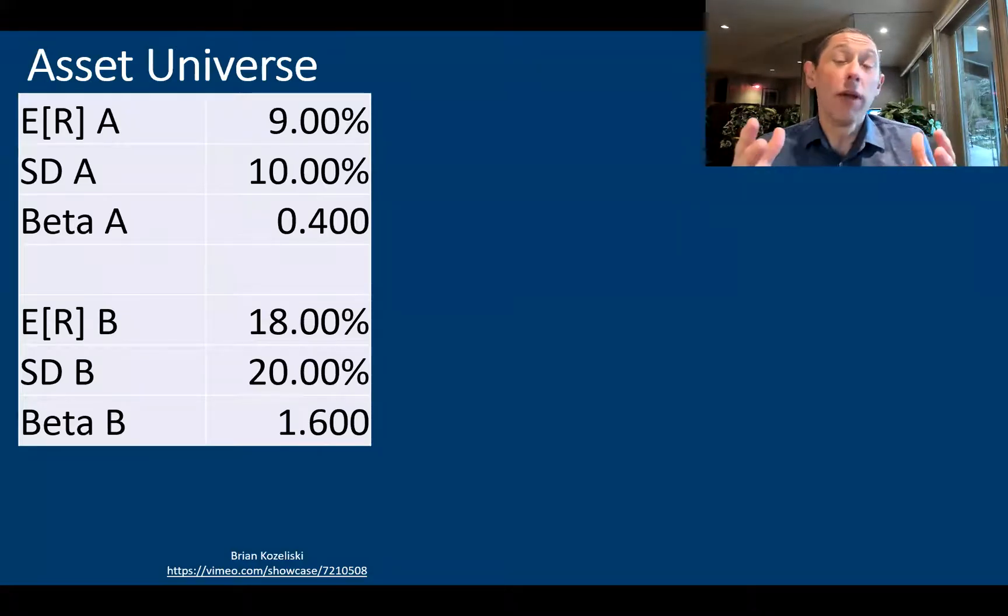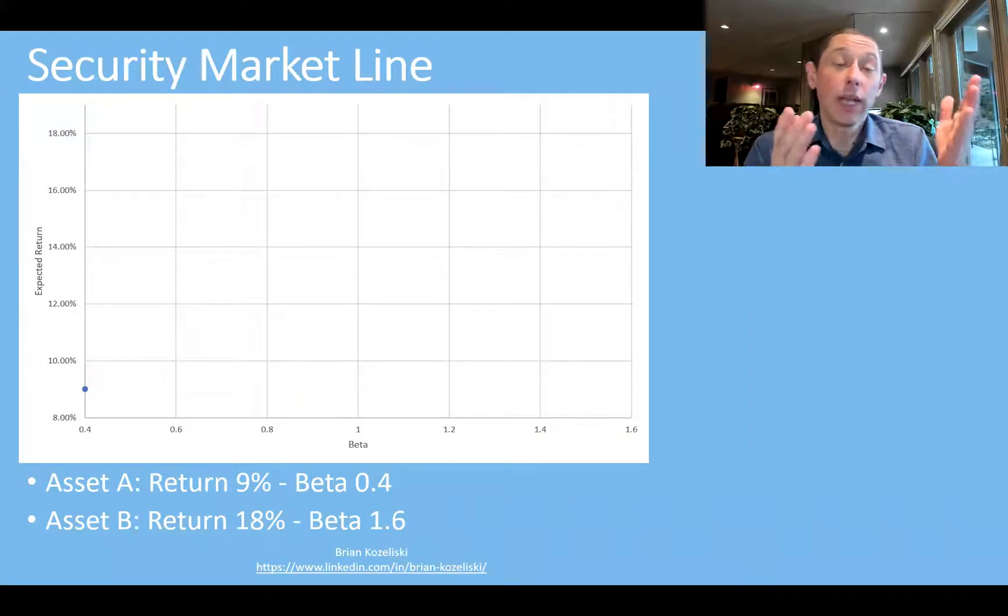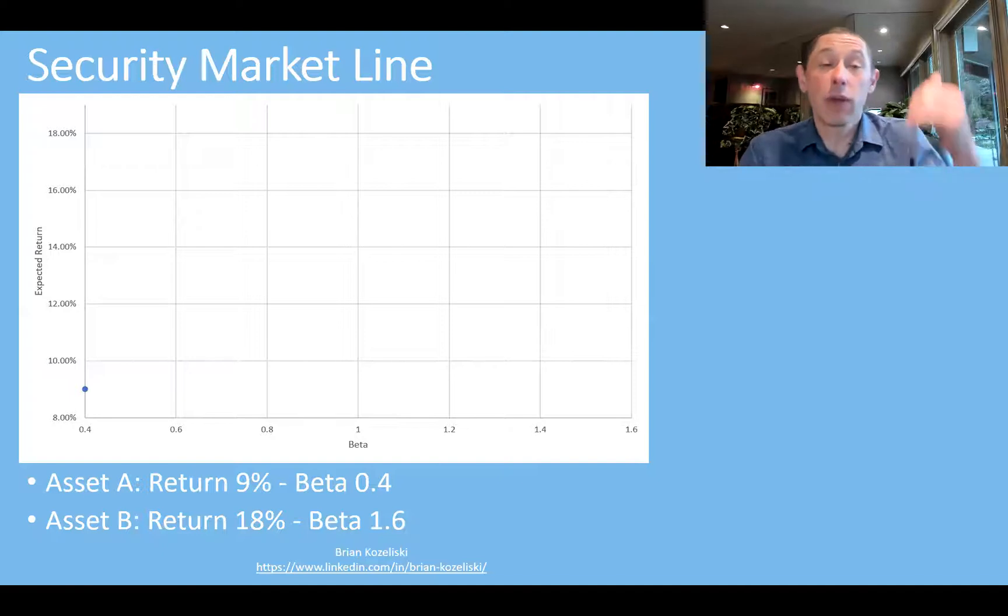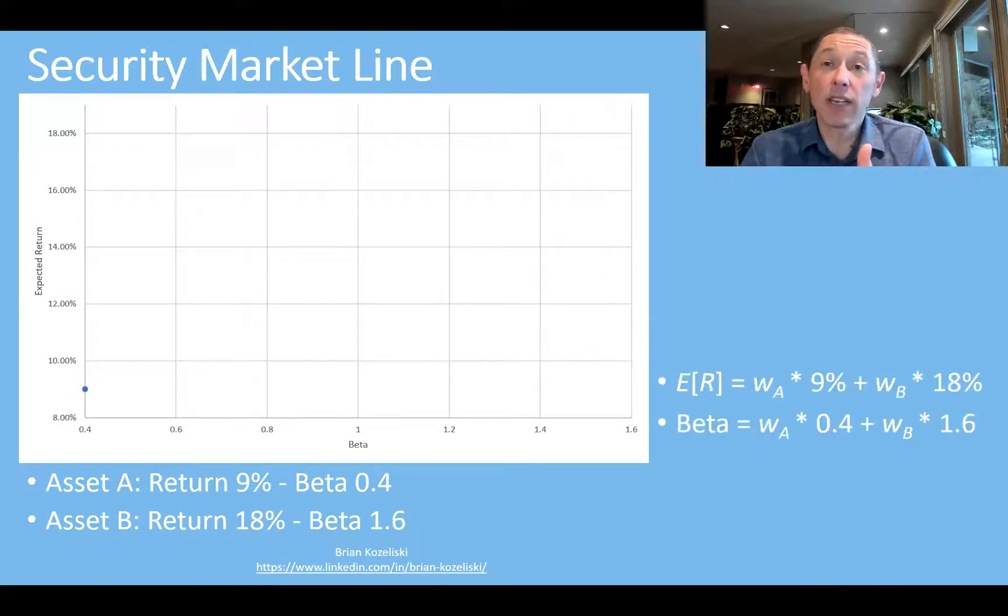So let's start off and just assume this is a little bit contrived, so bear with me and pause if you need to. I'm going to go through the numbers quickly. Let's say we have a two-asset universe. These are the two assets we have here. Now what we want to do is look at a security market line. So the risk number here is beta. That's all that matters. We have an asset with a return of 9 and a beta of 0.4, a return of 18, and a beta of 1.6.